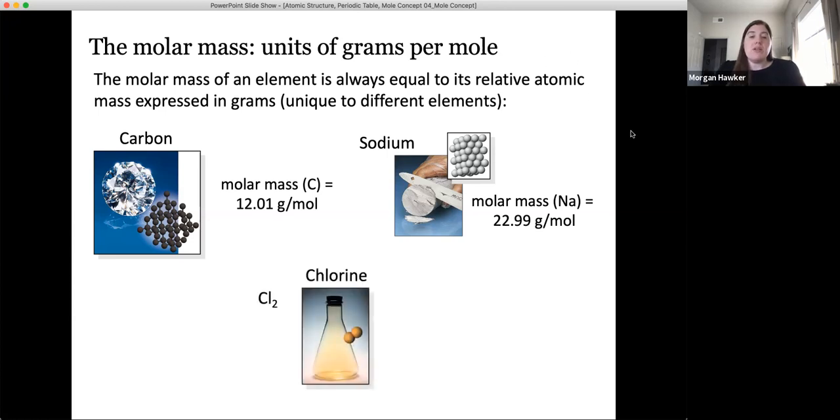We can also calculate the molar masses for diatomic elements in a similar fashion. Here we'll need to look at the molar mass of chlorine on the periodic table, but remember this is actually the molar mass of a single mole of chlorine atoms. Chlorine though is diatomic, so we'll need to multiply that value by two to calculate the molar mass of the diatomic compound Cl2, which we can do and calculate the value of 70.9 grams per mole.